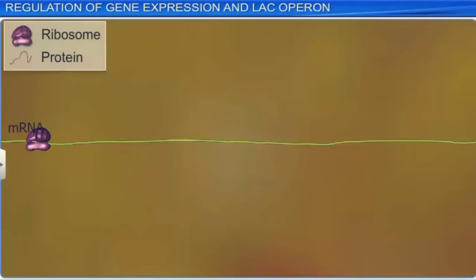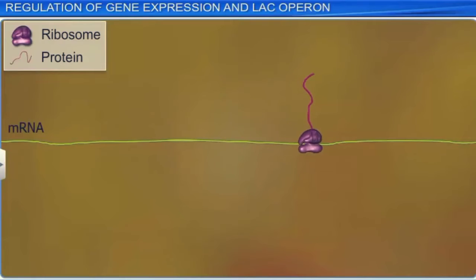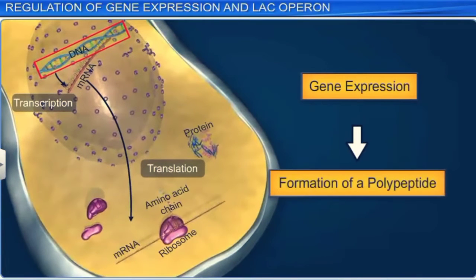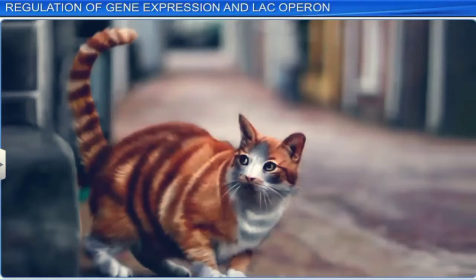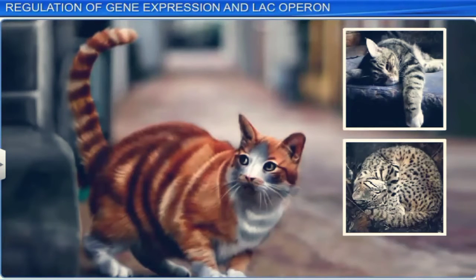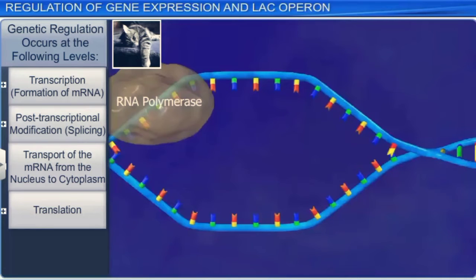Regulation of gene expression refers to controlling the timing of appearance and amount of protein that is synthesized. Gene expression results in the formation of a polypeptide, which is why it can be regulated at several levels. For instance, the different colored patches on a calico cat are due to different levels of expression of pigmentation genes in various parts of the skin.